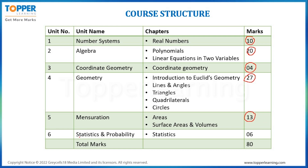The next and last unit is Statistics and Probability, and it will be having the chapter Statistics only, which will be of 6 marks. So, total 80 marks.